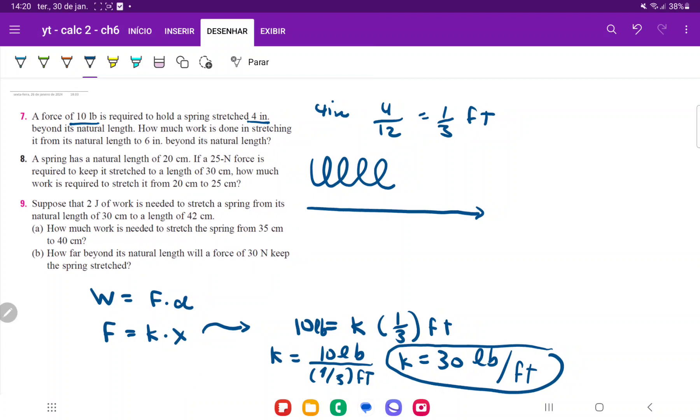And now what we're trying to do here is calculate the work done in stretching it from its natural length to six inches beyond its natural length. So remember that work is force times distance. We're measuring how much force you have to apply over a distance. However, this force is not constant. This force is variable. And the reason that it's variable is because it's an equation where the input is x and x is changing. x is the distance. So because this is a variable force, to sum it up, we have to sum it up using the integral.